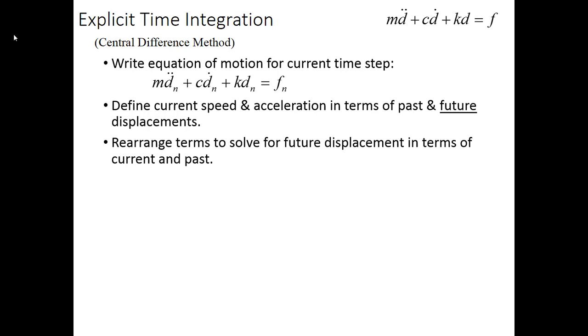Once we have that, we're going to rearrange the terms to get the future displacements on the left-hand side and everything else from the current and past on the right-hand side. Then we use that equation to solve for the dn plus 1. We're going to call that a recursion equation because it doesn't involve solving a matrix inversion.